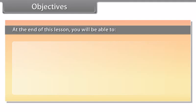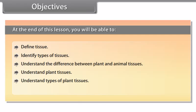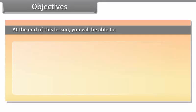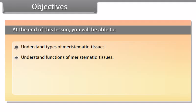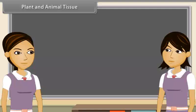At the end of this lesson, you will be able to: define tissue; identify types of tissues; understand the difference between plant and animal tissues; understand plant tissues; understand types of plant tissues; find the characters of meristematic tissues; understand types and functions of meristematic tissues; find the characters of permanent tissues; and understand types and functions of permanent tissues.